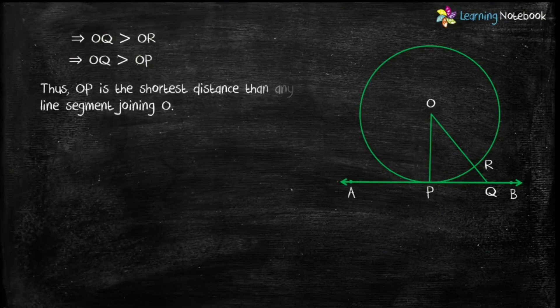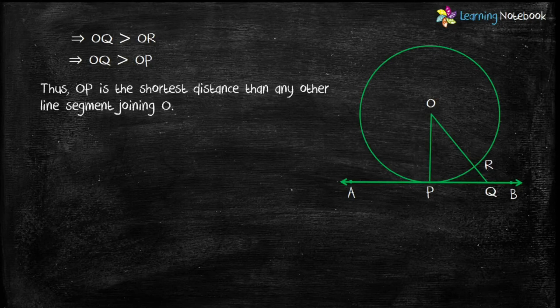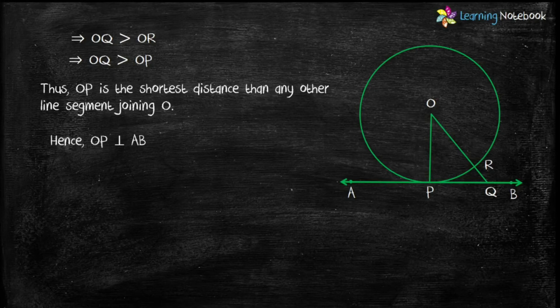Since OQ is greater than OP, OP is the shortest distance than any other line segment joining O. Hence, OP is perpendicular to AB and thus we have proved the theorem that a tangent to a circle is perpendicular to the radius through the point of contact.